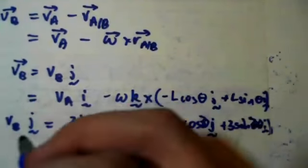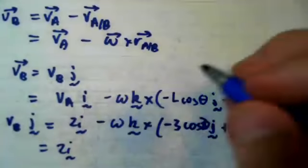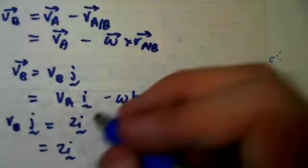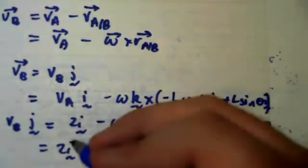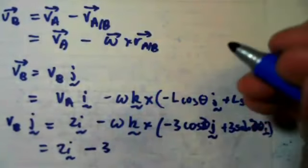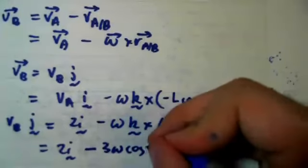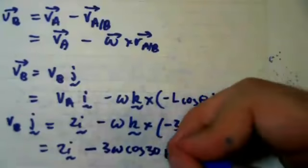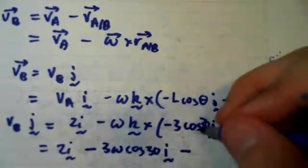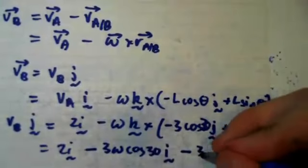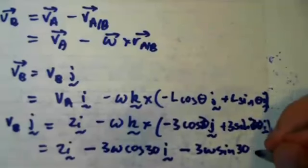Now we can then go ahead and simplify this equation by saying it's 2I minus 3 omega cosine 30 I minus 3 omega sine 30 J.